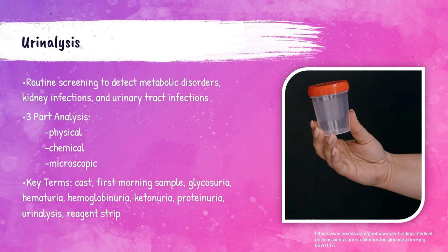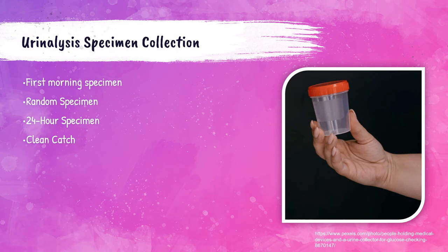Dipsticks or reagent strips are little strips that have pads of chemicals on them. When dipped into the urine, color changes on these pads occur if certain substances are present within that urine. Urinalysis specimens can be first morning specimens — those collected directly after a patient wakes in the morning.